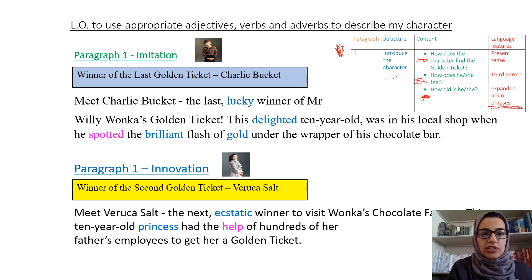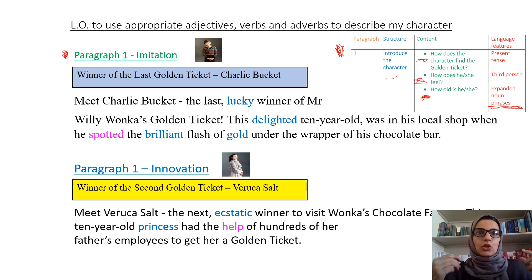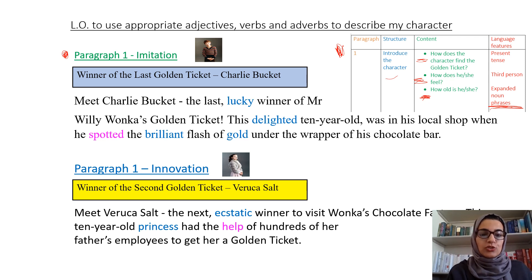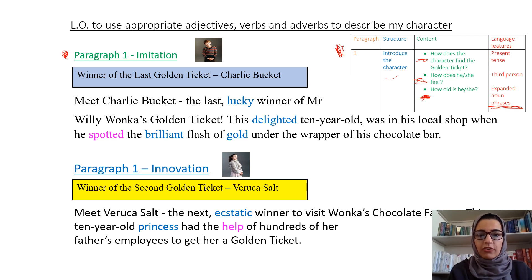This is the imitation — the Charlie Bucket one — and I'm going to use this to write my own. So we've got 'Winner of the last golden ticket, Charlie Bucket.' That's there to make it look a bit like a headline because remember we're reporters and this is a newspaper article. We've got 'Meet Charlie Bucket, the last lucky winner of Willy Wonka's golden ticket. This delighted 10 year old was in his local shop when he spotted the brilliant flash of gold in the wrapper of his chocolate bar.' It's a very short first paragraph.